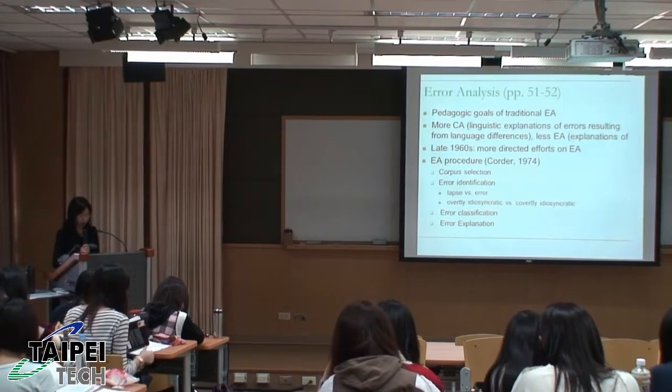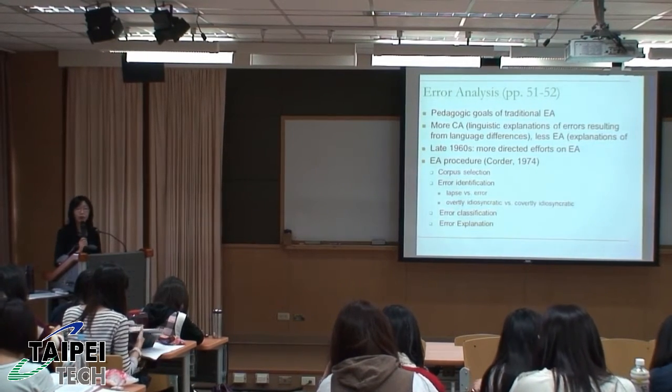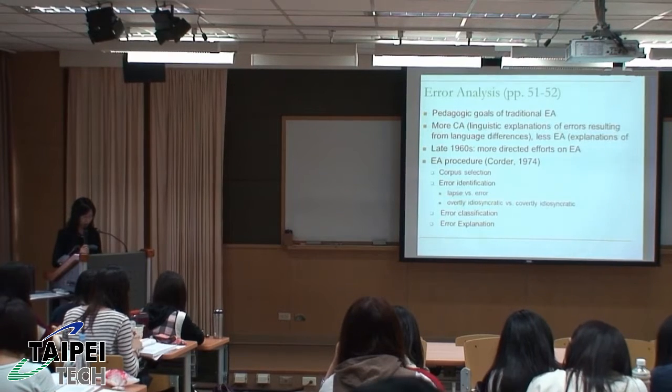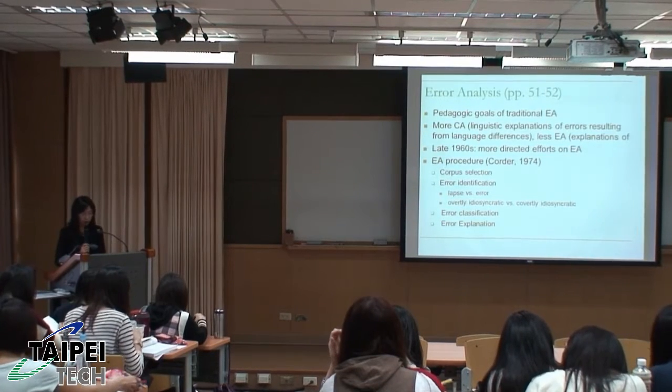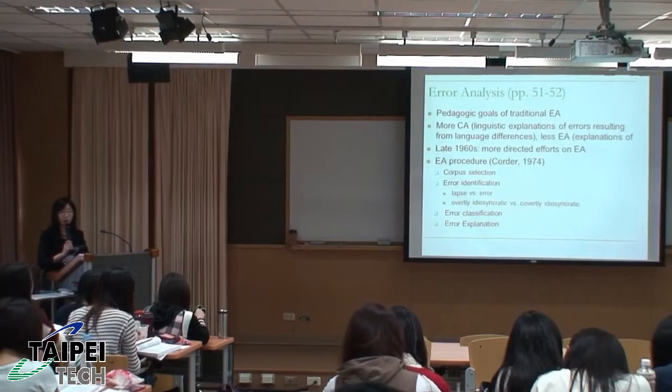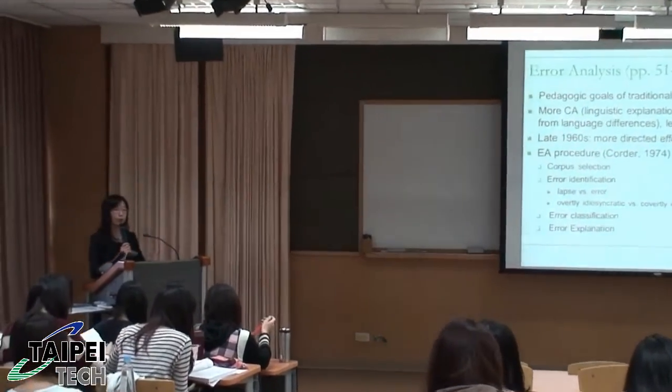The procedure for error analysis is spelled out in Corder in 1974 as follows. First, a corpus of language is selected. This involves deciding — we're now turning to page 52 — on the size of the sample, the medium to be sampled, and the homogeneity of the sample with regard to learners' ages, first language background, and state of development.